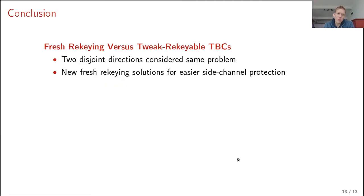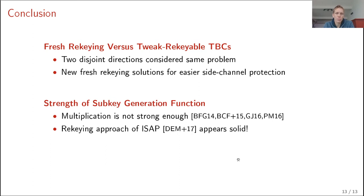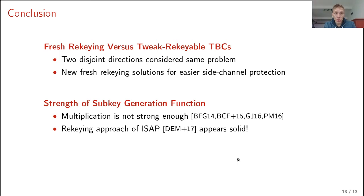To conclude, two different fields have been observed to consider the same problem, and solutions from one can be used to obtain solutions for the other. Regarding the re-keying approach, it has been shown that finite field multiplication alone is not strong enough — one can mount side-channel attacks on this multiplication. It is therefore interesting to consider what other solutions can be used for subkey generation. Notably, ISAP, a submission to the NIST lightweight competition, uses a sponge for re-keying, which appears to be a very solid approach.